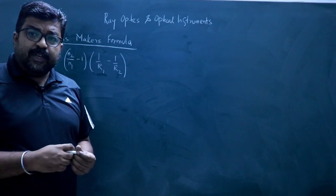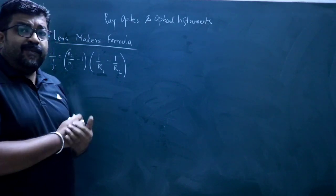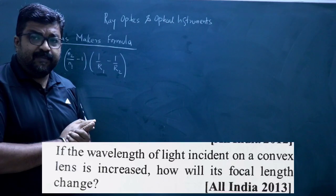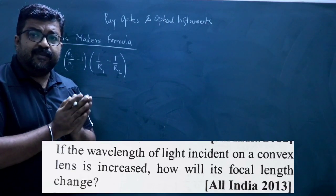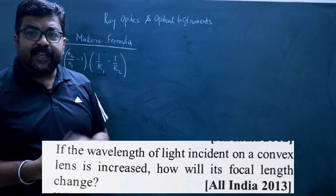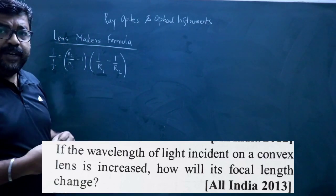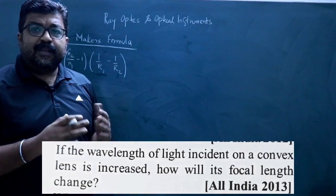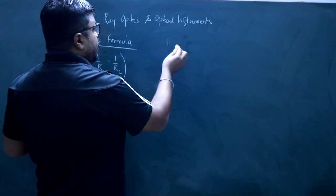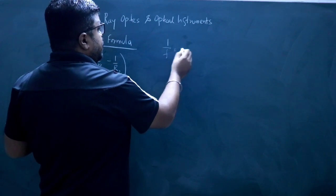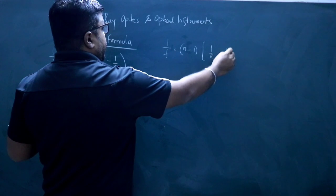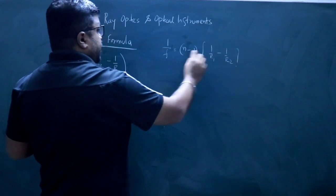The second question is: if we change the wavelength of light, what will be the change in focal length? What will be the change in focal length if the wavelength of light is increased? In the normal case, we think that the lens is in air, so 1/f equals (n − 1)(1/R1 − 1/R2).